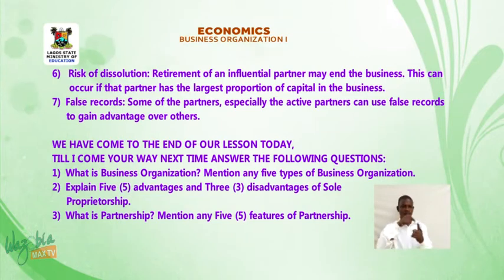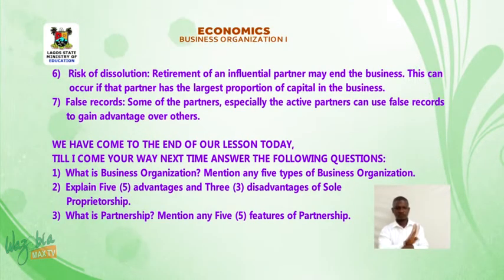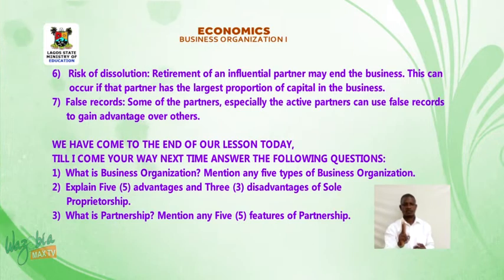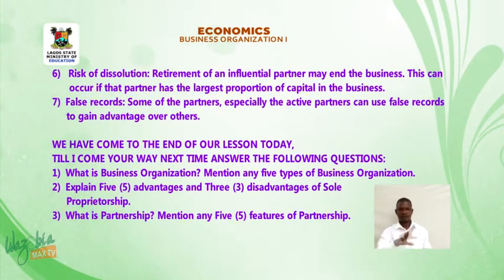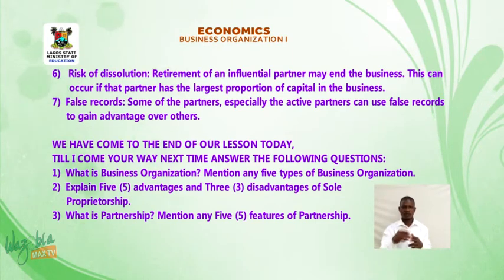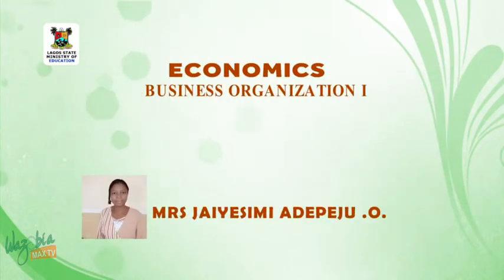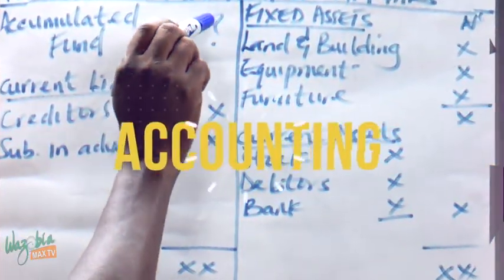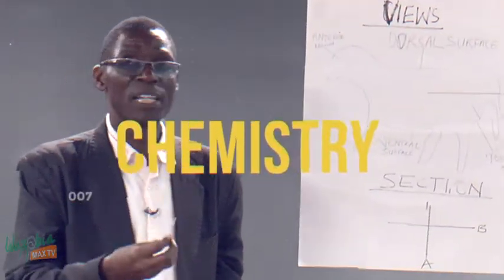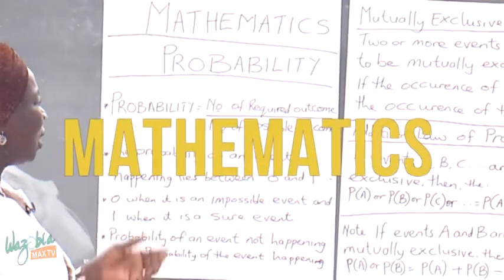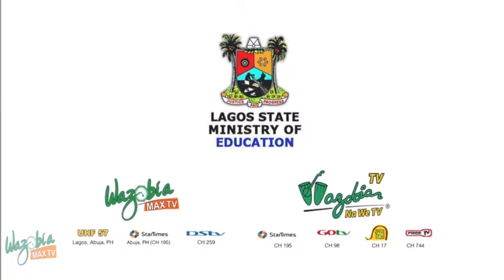We have come to the end of our lesson today. Till next time, answer the following questions: 1. What is business organization? Mention any five business organizations. 2. Explain five advantages and three disadvantages of sole proprietorship. 3. What is partnership? Mention any five features of partnership. Thank you. We'll see you next time.